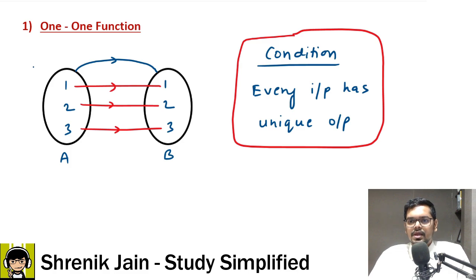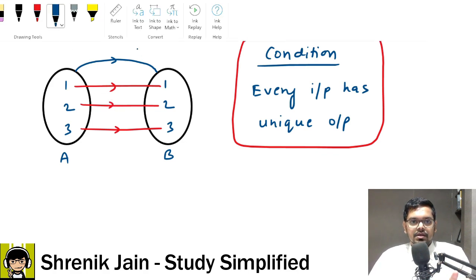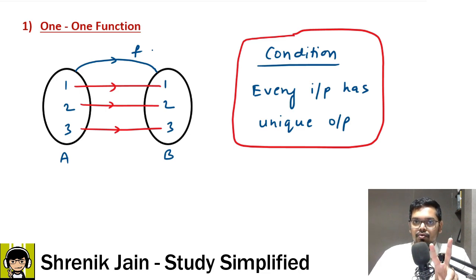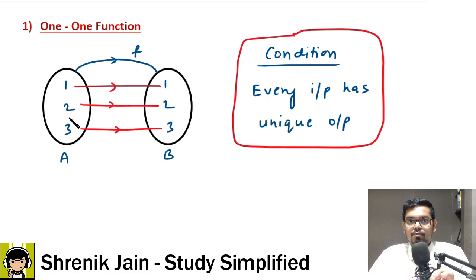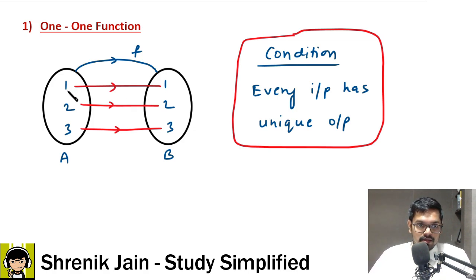In simple terms, a one-one function is simply: every input has a unique output — there won't be the same output. For an example with the arrow diagram, we can say this relation is a function. A function has two properties: every input should be connected to some output, and every input has only one output. Both properties are satisfied, so this relation is a function. Now, why is it called a one-one function? Because every input has a unique output — they don't have the same output.